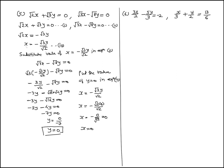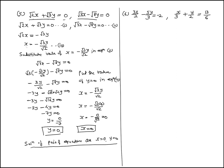Therefore x equal to 0. The solution of the pair of equations is x equal to 0 and y equal to 0. We can directly detect this: if both equations have constant term value 0, then x equal to 0 and y equal to 0 directly. Now question number 6.